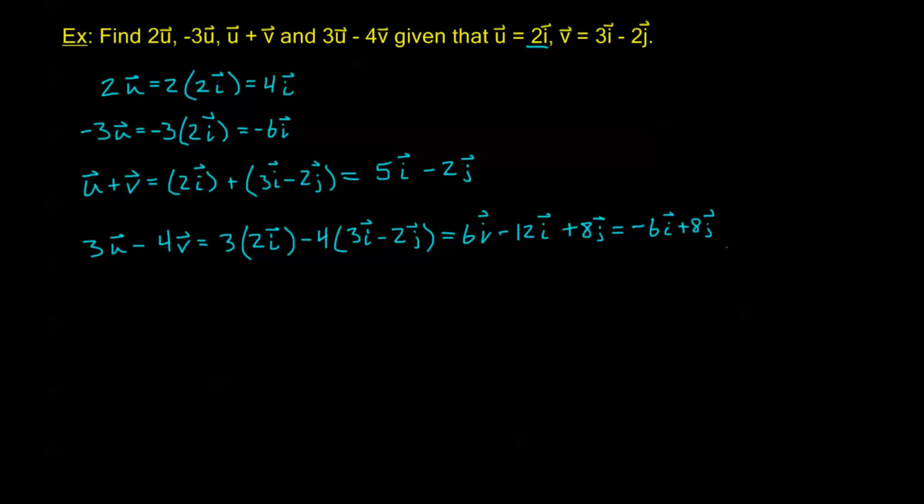And we're done. We have this difference, 3U minus 4V, in the IJ form of the resultant vector. And that's how we're going to use this.